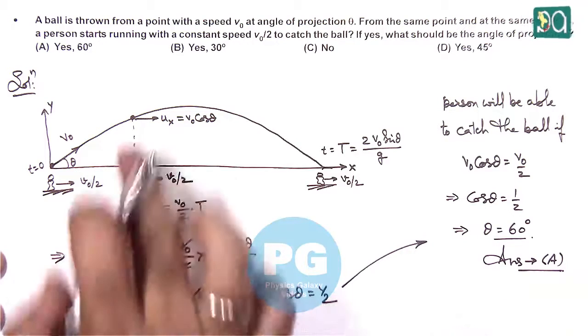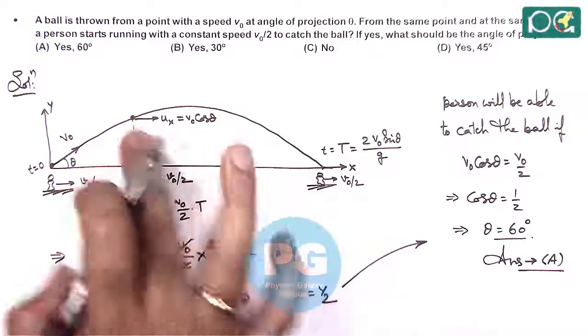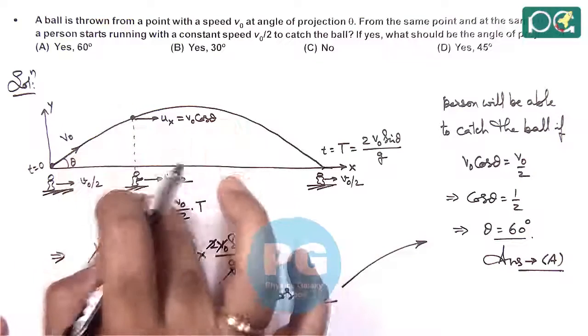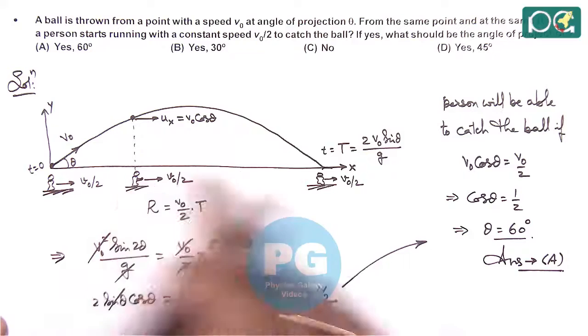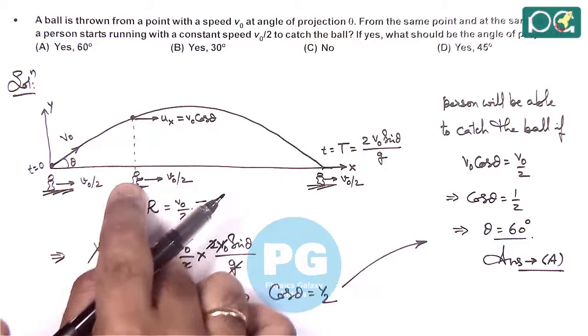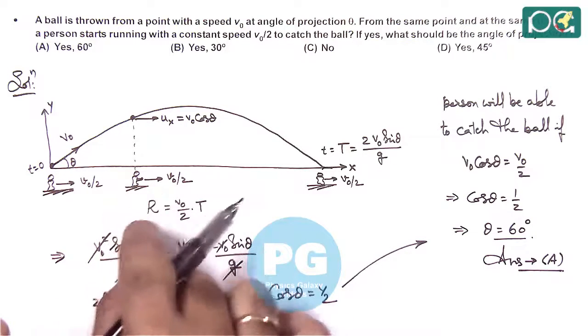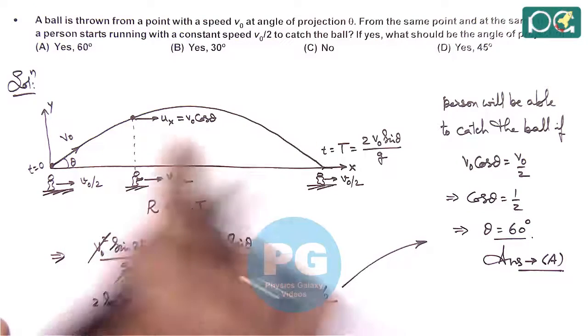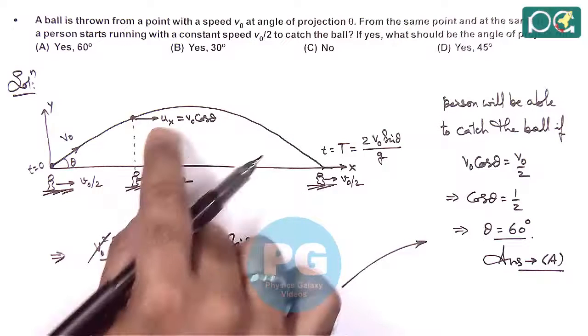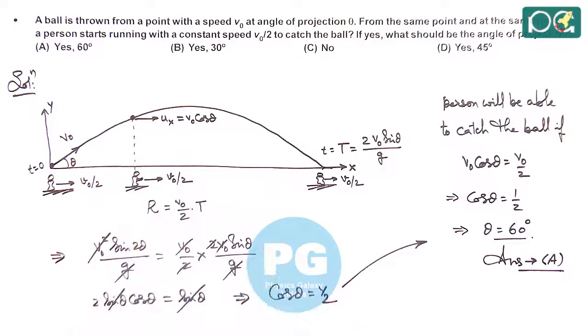So if it strikes to you or you are able to visualize how he will be able to catch the ball if the ball is always vertically above him, or in the reference frame of man, if he will see that ball is just going up and coming down, he will be able to catch it. Because horizontal motion of both are equal and horizontal relative velocity of ball with respect to man is 0.